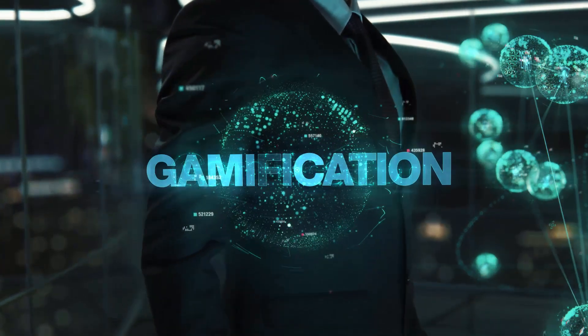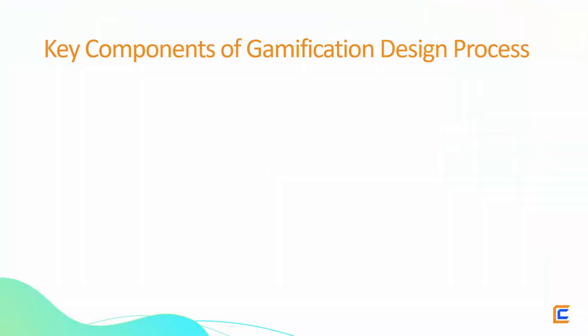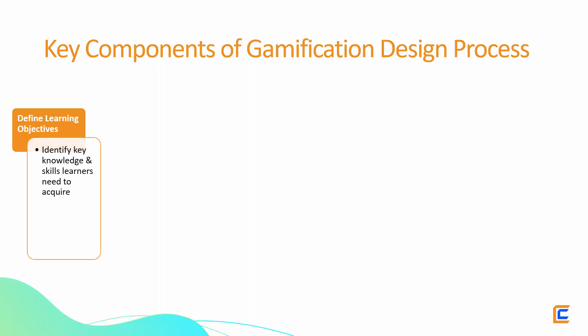Let's take a look at the key components of the gamification design process. Step 1: Define Learning Objectives. The first step in the gamification design process is to define the learning objectives of your e-learning course. This involves identifying the key knowledge and skills that learners need to acquire to achieve the learning outcomes. Once you have identified the learning objectives, you can then design the gamification elements that will support those objectives.